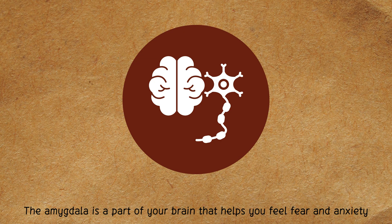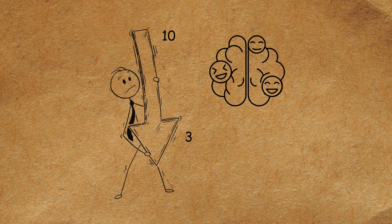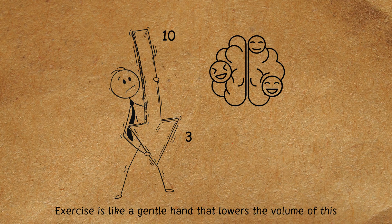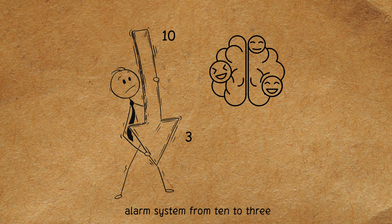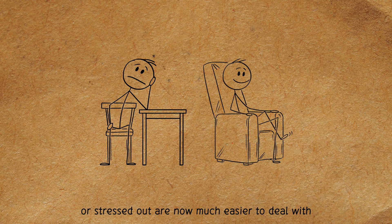The amygdala is a part of your brain that helps you feel fear and anxiety. Exercise is like a gentle hand that lowers the volume of this alarm system from 10 to 3. Things that used to make you feel overwhelmed or stressed out are now much easier to deal with.